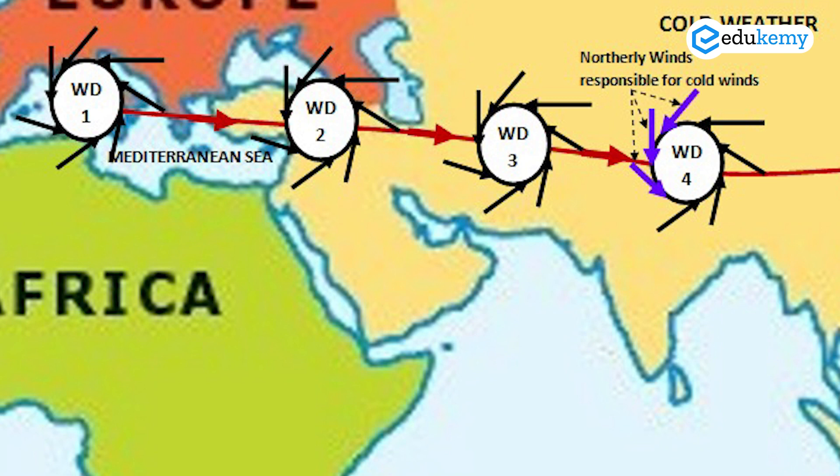Otherwise, Western Disturbances are phenomena of the winters — like late November, December, January, February, and sometimes as late as March and April. What happens in this? There are strong upper tropospheric winds, a set of winds called Sub-Tropical Westerly Streams. These winds are in the upper troposphere, at heights of approximately 14-15 km above the surface. These winds are able to bring moisture from the Mediterranean Sea, from the Black Sea, and parts of the Persian Gulf.